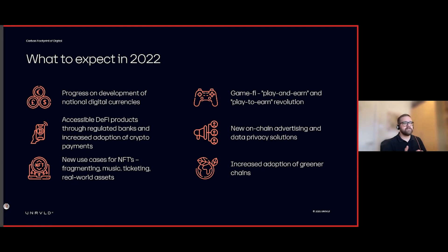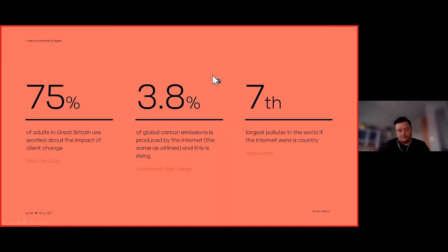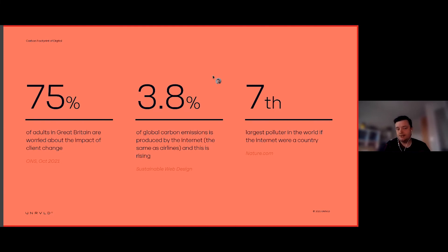The final technology trend is around carbon footprint — sustainability is a really big topic across the world and across many industries. 75% of adults are worried about the impact of climate change. Digital in general has been largely ignorant of the role it's going to play: 3.8% of emissions generated is the same as the airline industry when not in lockdown — that's what the internet is actually generating. If you looked at it as a country, it would be the seventh largest polluter in the world.